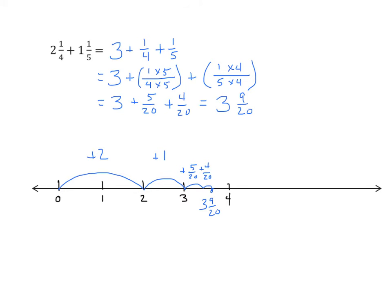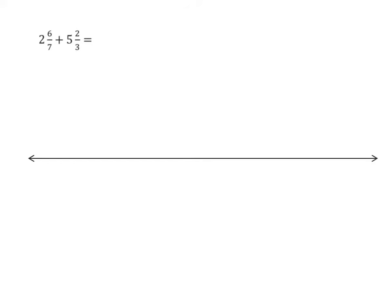Let's do another example. I have 2 and 6 sevenths plus 5 and 2 thirds. I want to pay attention to the fractional part this time. I notice that 6 sevenths is greater than half, and 2 thirds is greater than half. So that means the sum of those two fractions is going to be greater than 1. So I know that 2 plus 5 is 7, plus 1 is 8. We know the answer is going to be greater than 8.